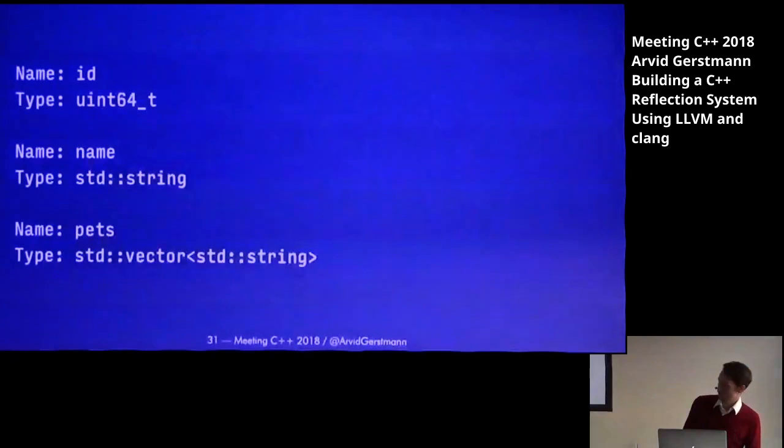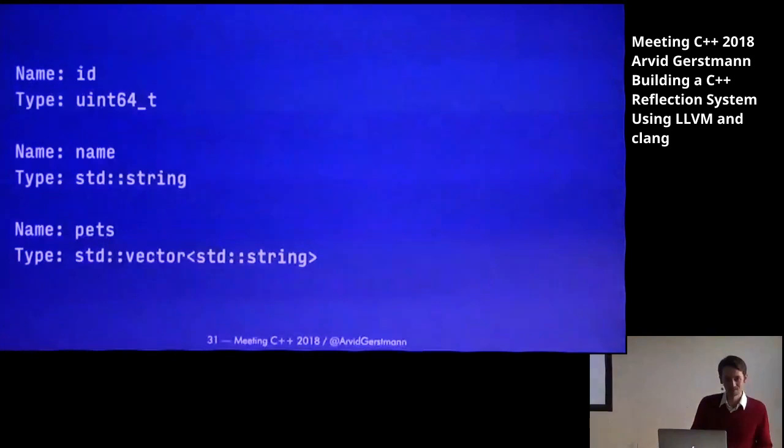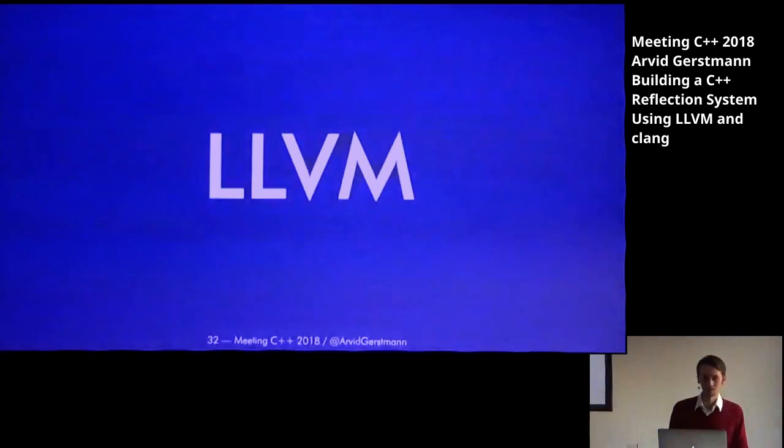But it's all still manual work. We still need to implement this getClassSimple for every single structure, for every single class in our program which we want to have reflected. And we don't want to do that — we're lazy, right? We want to have it automated for us. So this is where LLVM comes into play.